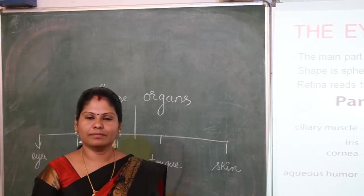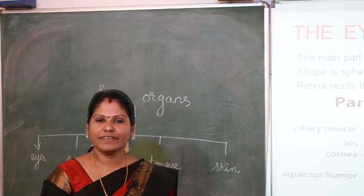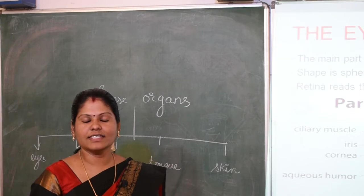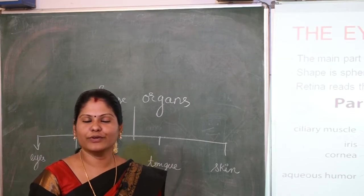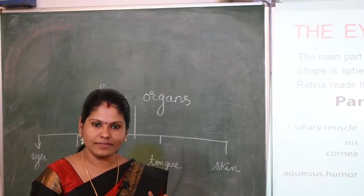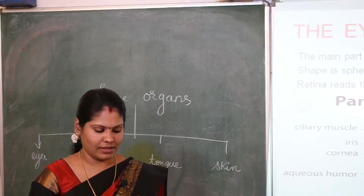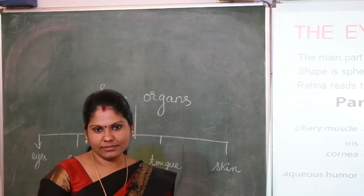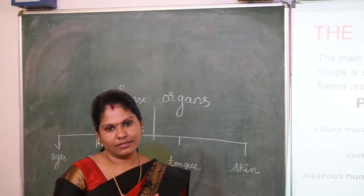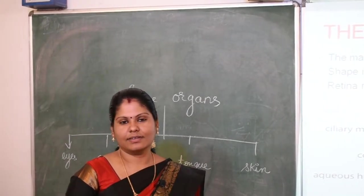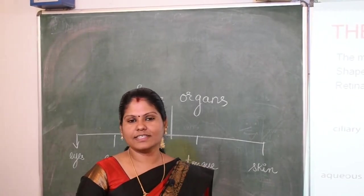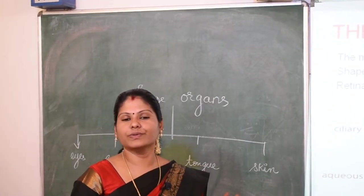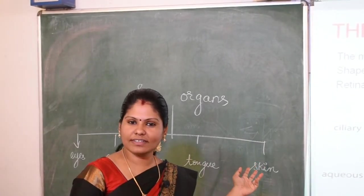Hi children, welcome back. In the last class we saw about the five sense organs: the eyes, nose, tongue, skin, and ears. In this class we are going to see about the sense organs in detail.